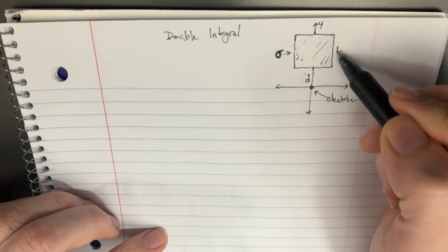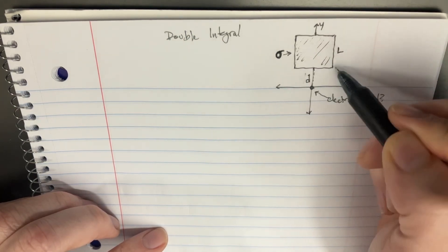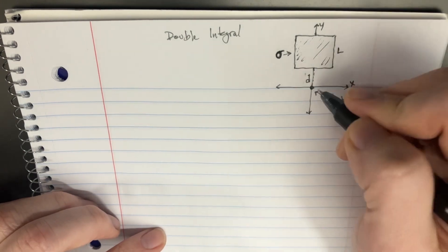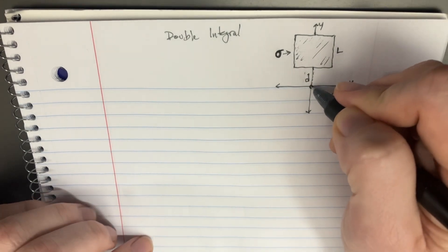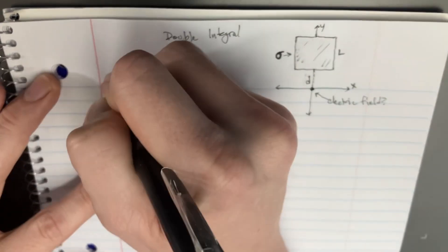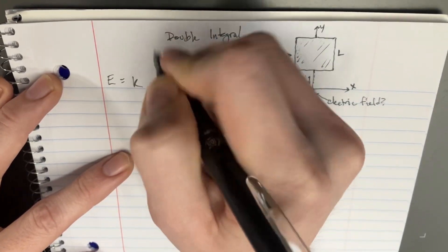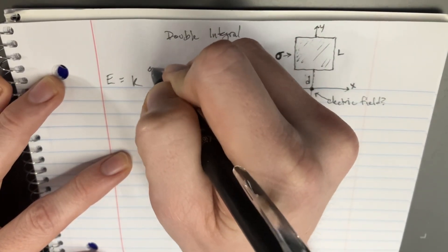And the lengths of this area is going to be L this way. And we're looking for the electric field at the origin right here. So let's remind ourselves of our equation: K, Q over R squared.